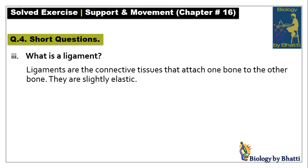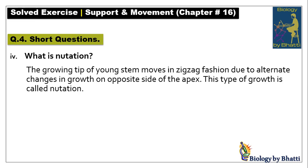Number three: what is a ligament? A ligament is a connective tissue that connects one bone to another bone at joints, and they are slightly elastic. Number four: what is nutation? Nutation is a type of plant movement in which the growing tip of a young stem makes a zigzag movement due to alternate changes in growth on opposite sides of the apex.